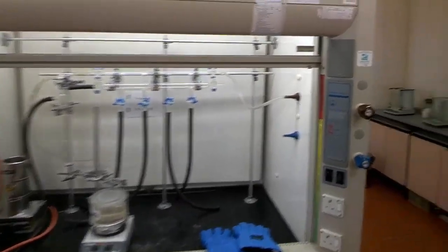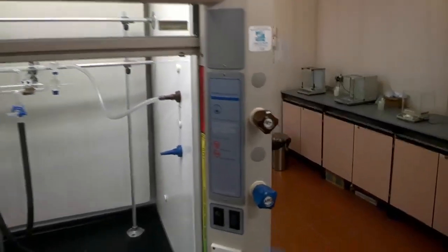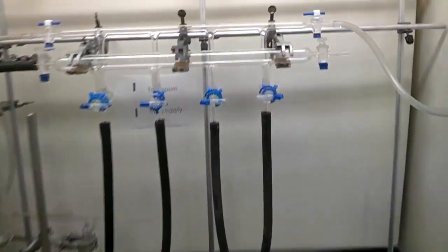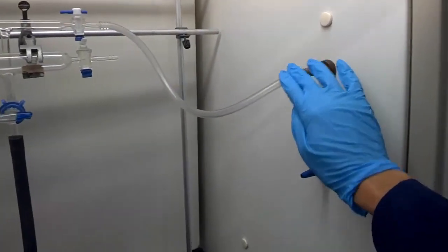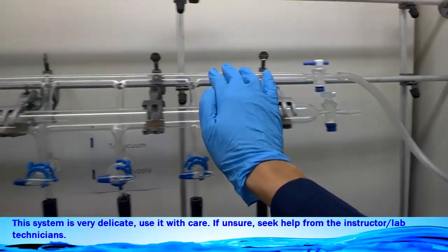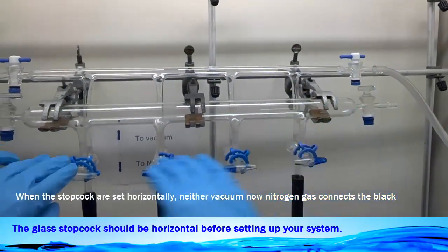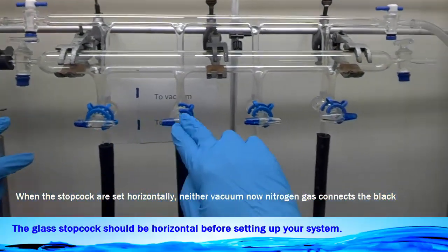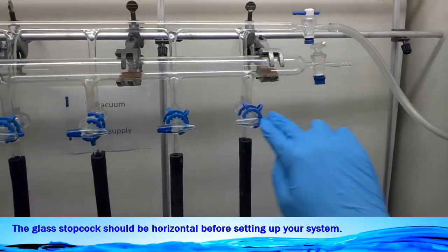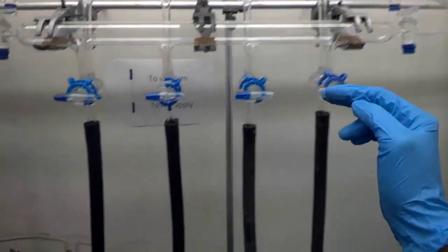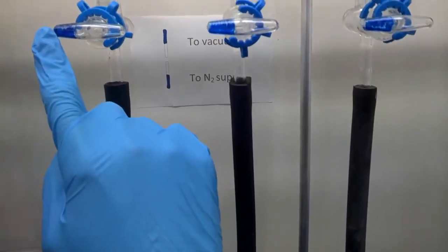There are a few parts to the Schlenk line. Over here, you see the nitrogen source with the knob there, and here you see the centerpiece. The nitrogen source tubing connects to the main double manifold. Here you see four glass joints top cock, and they should be horizontal before you start any reaction. They can point to the left or point to the right. It doesn't matter as long as they are horizontal.